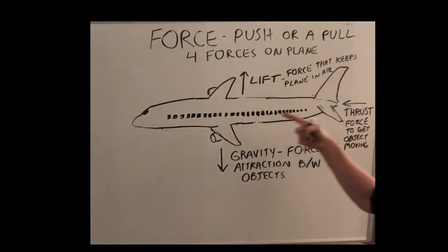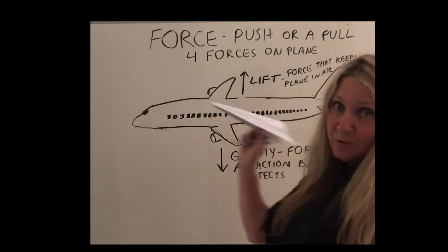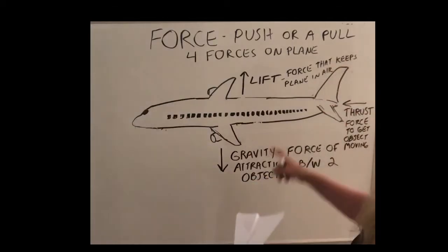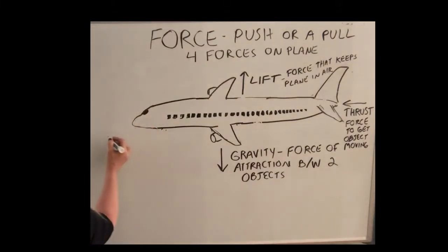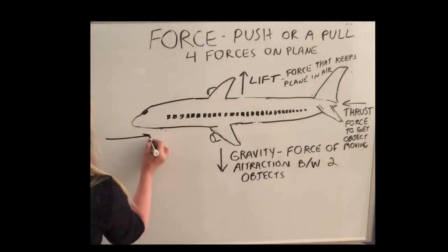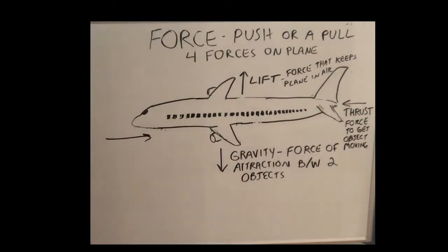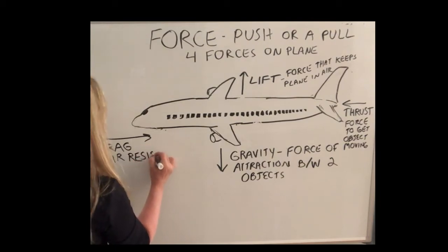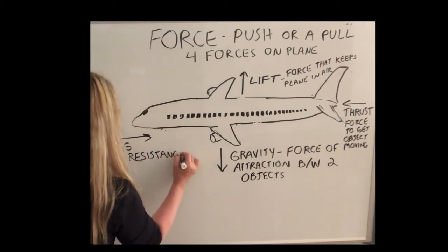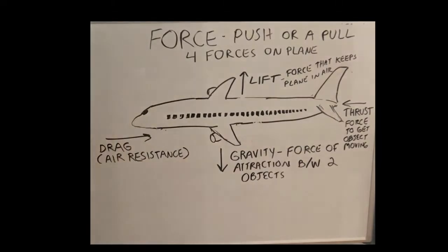Now what is going to counteract that force? So if you throw this plane or this airplane takes off, the force that goes opposite of thrust is called, in the air, it's called drag. Or air resistance. And this is a type of friction.